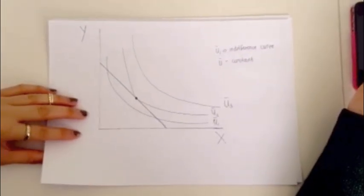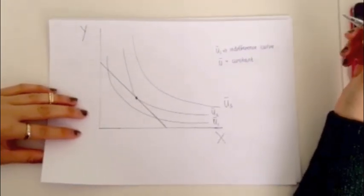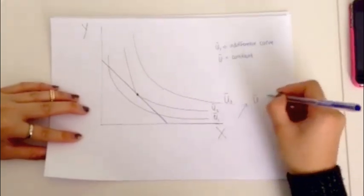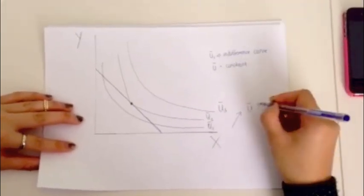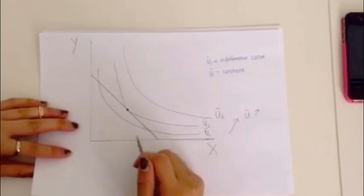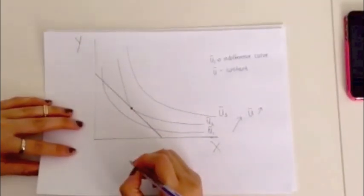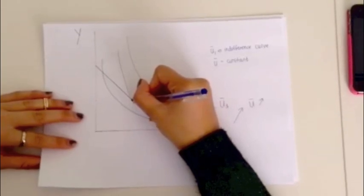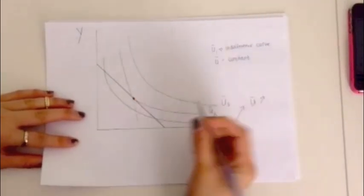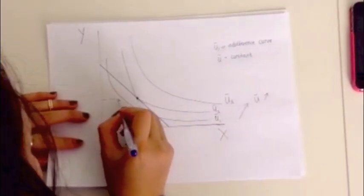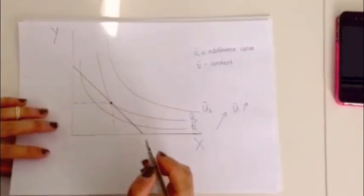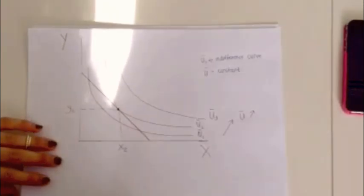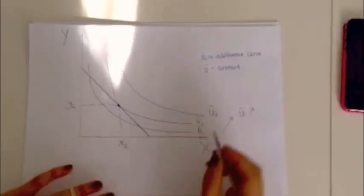So as you can see, the further you go from the origin, the higher your utility is. So your optimal bundle will be on the point where your budget constraint meets the highest possible indifference curve. And so in this case, that is where the budget constraint meets U2. So then if you mark that on X and Y, you can then read off the graph how much of good X and how much of good Y you should buy.